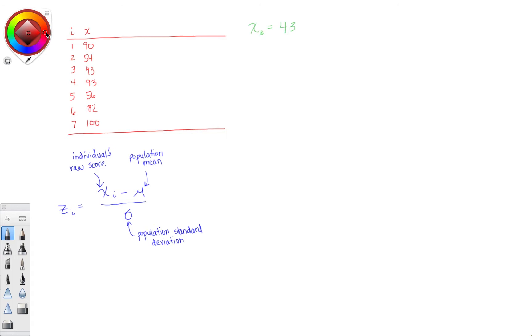To standardize that raw score and turn it into a z-score, we need population mean and population standard deviation. I'll trust that you can calculate the mean. I'll give you that. In this case, the mean of these data is 74.